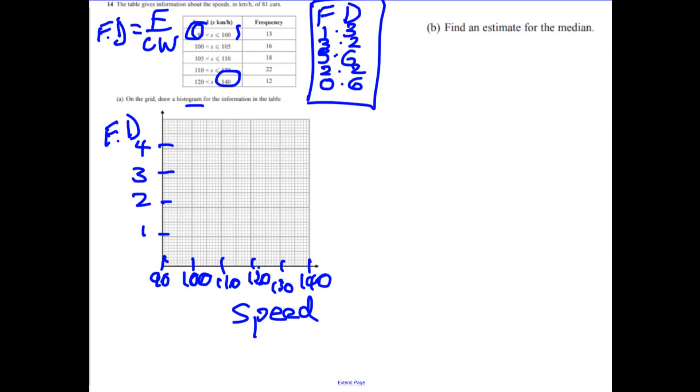Now we're going to draw these in. Obviously you're going to use a ruler. I'm going to do it nice and quick for you. So the first one comes at 1.3, so 1.3 is about there, coming down to 100. Next one goes up to 3.2, which I'm going to put in there for you, but it only goes across to 105. So there we go. And then the next one goes up to 3.6 and it's going across to 110. So we get two narrow bars there.